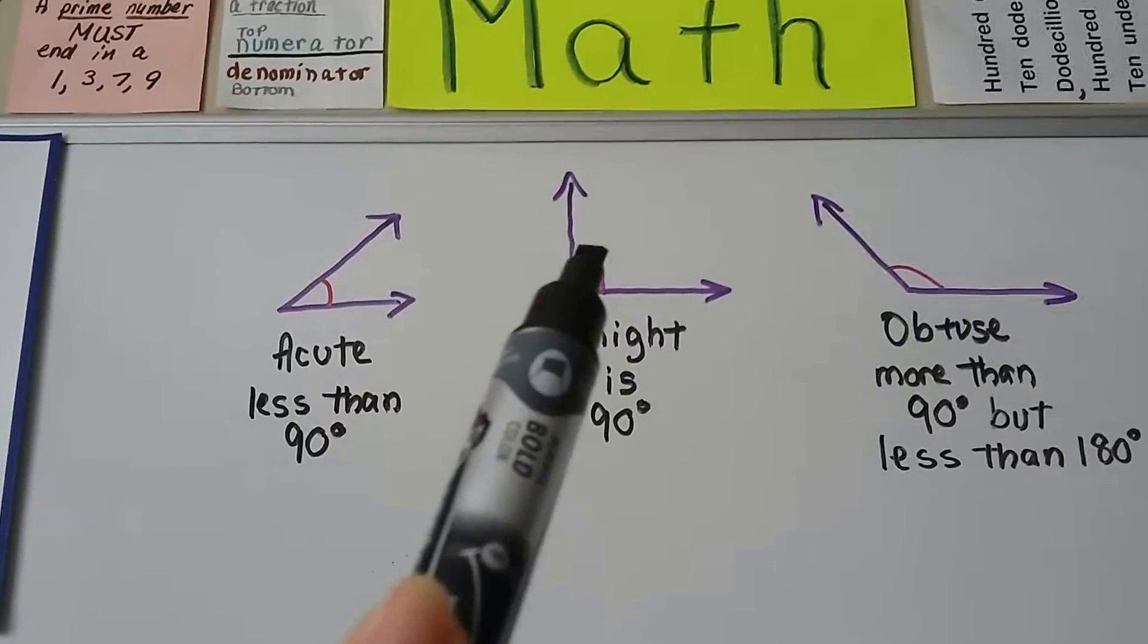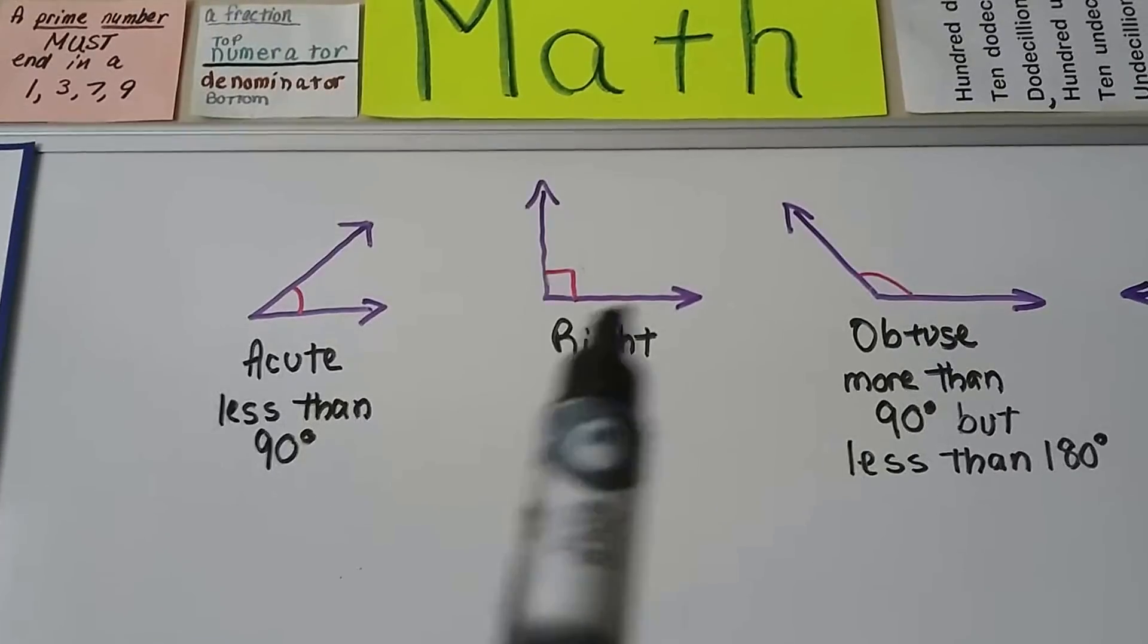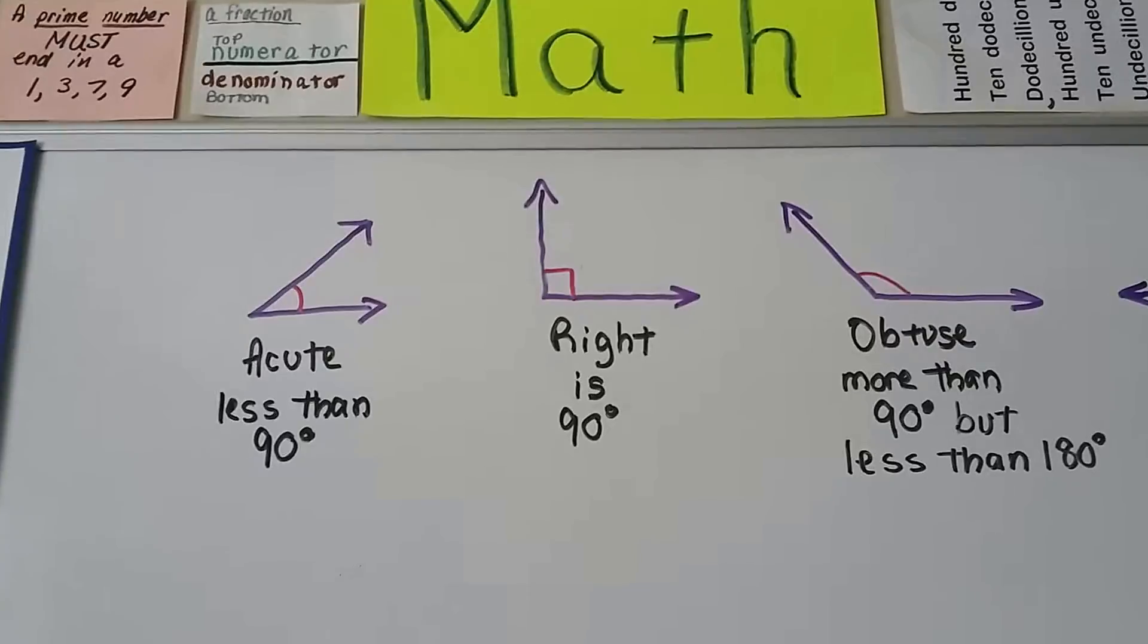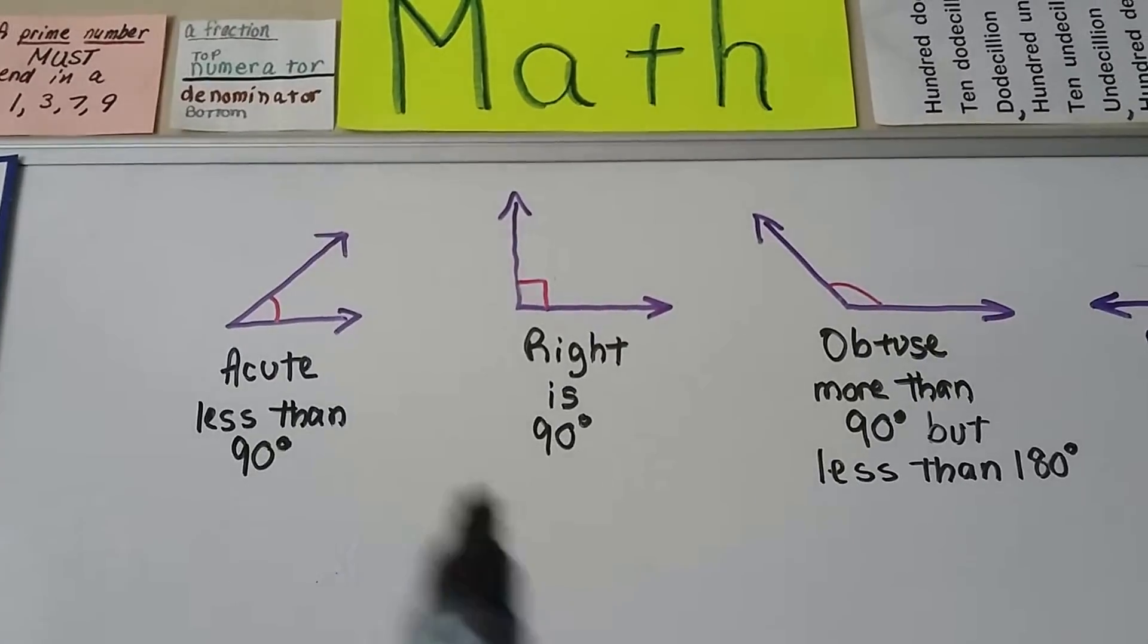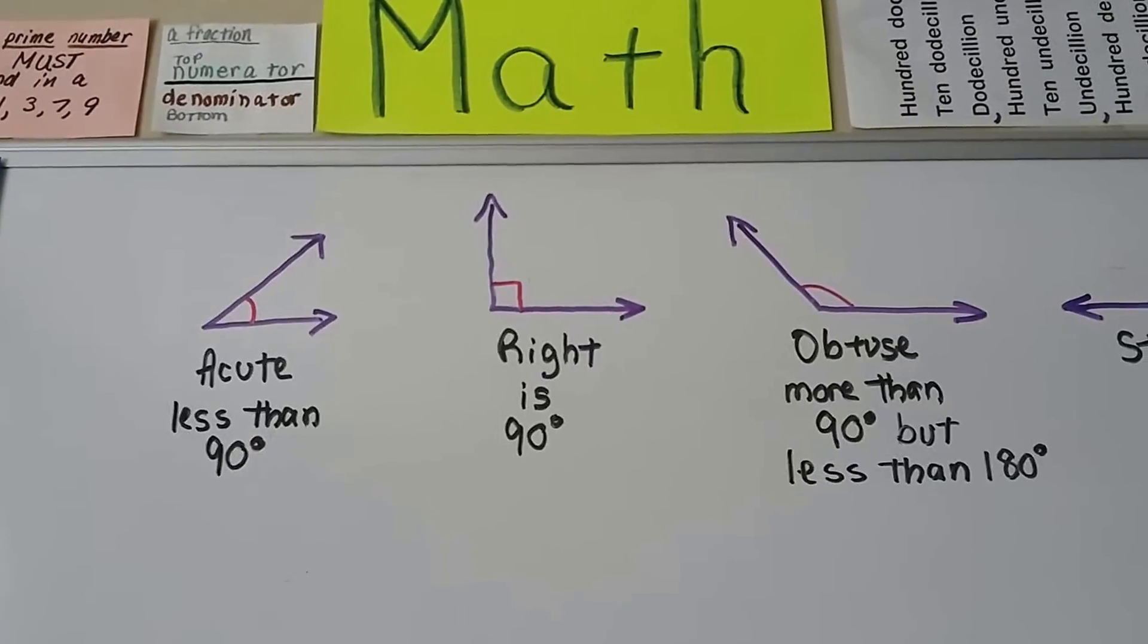A right angle is going to have a little box inside of it. It's like the edge of a square or a box. That's a right angle. It can face any direction. As long as that little box is in there, it's 90 degrees.